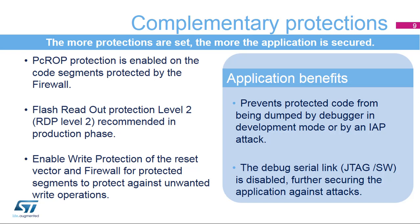In production, ST recommends setting the STM32 readout protection, or RDP, to level 2, which disables the JTAG link to the MCU. Setting the RDP to level 2 secures the MCU against any external attacks to the protected segments. ST also recommends enabling write protection on the reset vector and the firewall configuration to prevent any unwanted write operations to the protected areas.